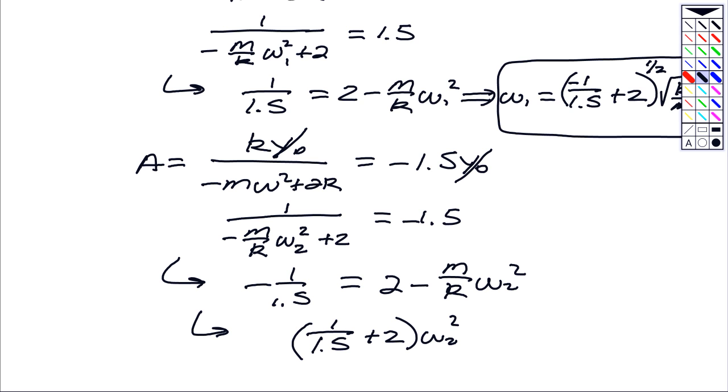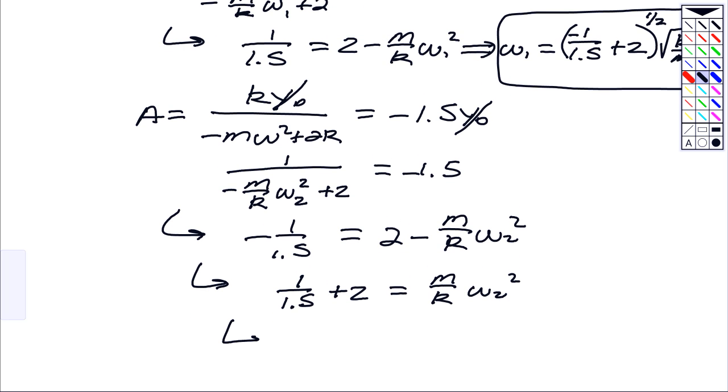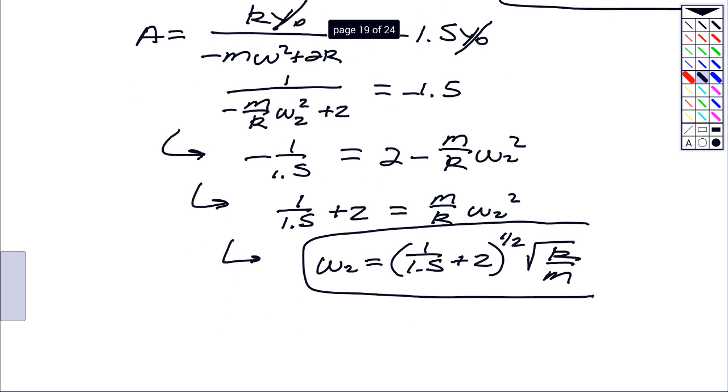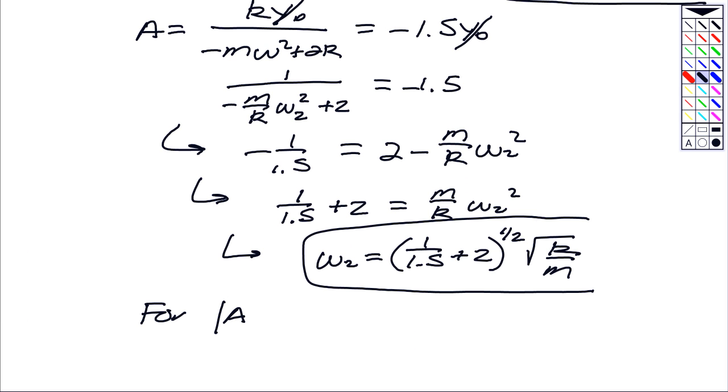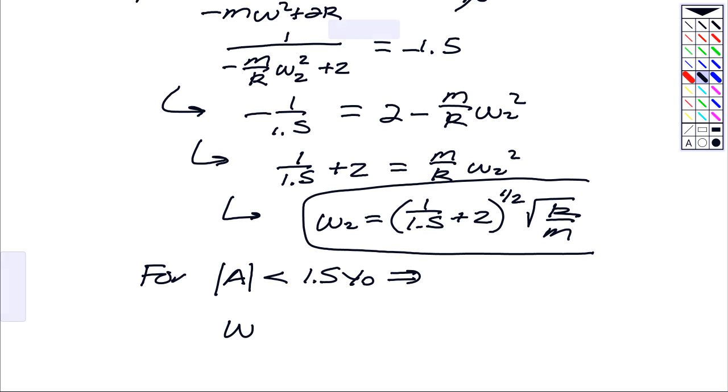What I need to do is 1 over 1.5 plus 2 is equal to M over K omega 2 squared. So the value of omega 2 that makes that true is going to be equal to the square root of 1 over 1.5 plus 2, square root of K over M. So the answer is for the magnitude of A to be less than 1.5 Y naught, we need to have omega to be less than omega 1 or we need to have omega to be greater than omega 2, where omega 1 and omega 2 are as shown above.